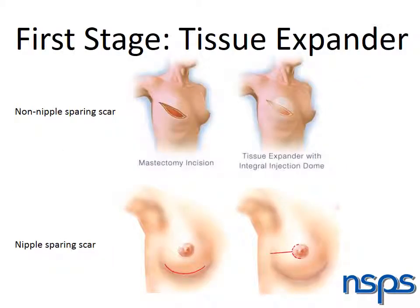At your first surgery, after your mastectomy is completed, your plastic surgeon will perform your first stage reconstruction, at which time a tissue expander will be placed. This tissue expander is placed under the muscle on your chest and does not require another incision. Expected scars will be those related to the mastectomy. In most cases, this incision will run across the breast beginning where the nipple used to be, angling up towards the armpit.